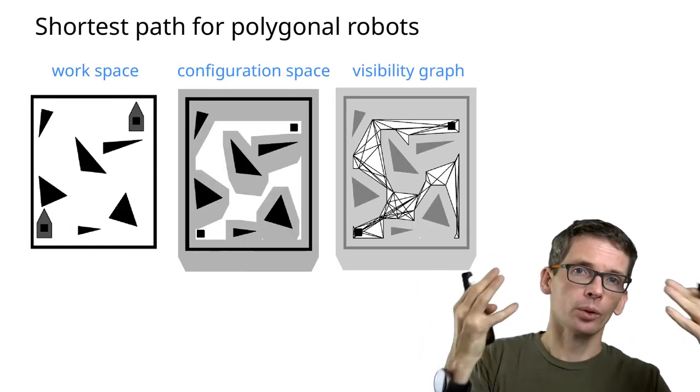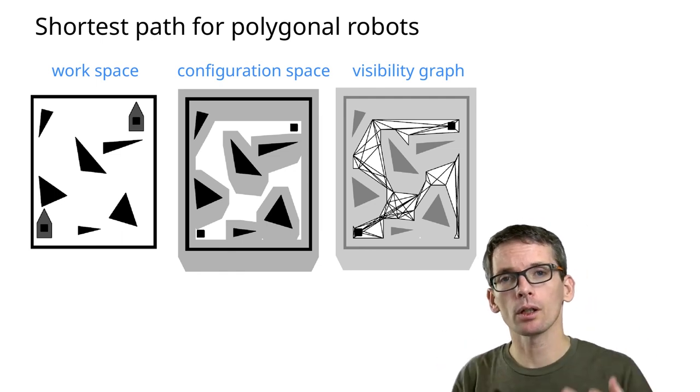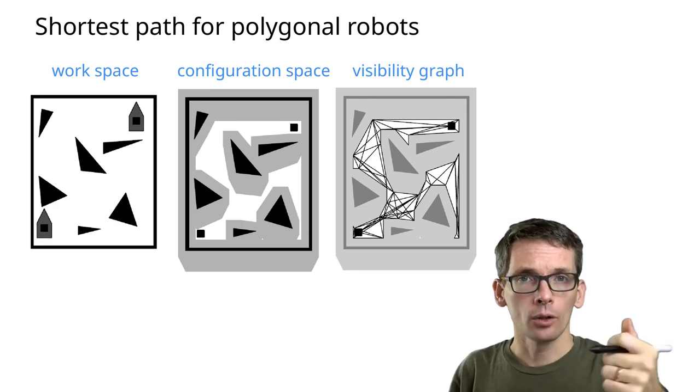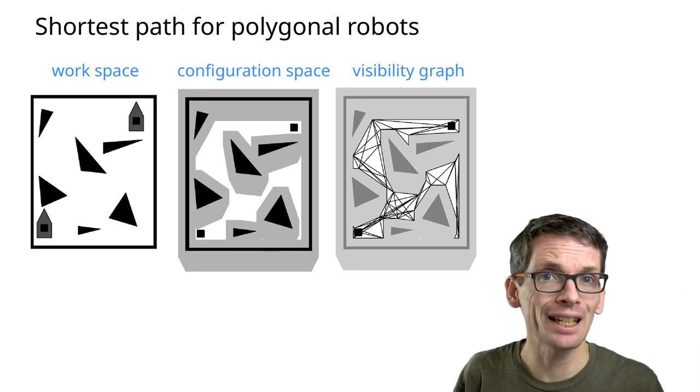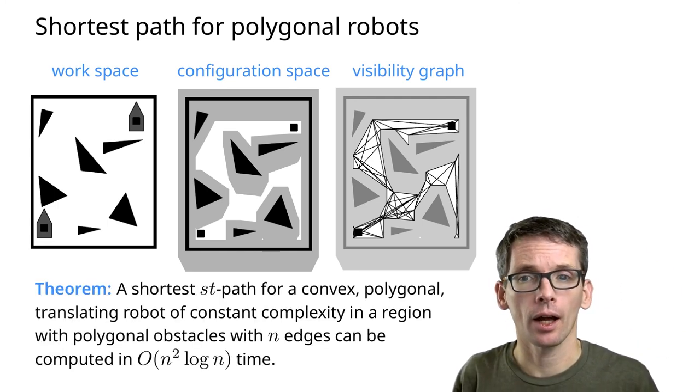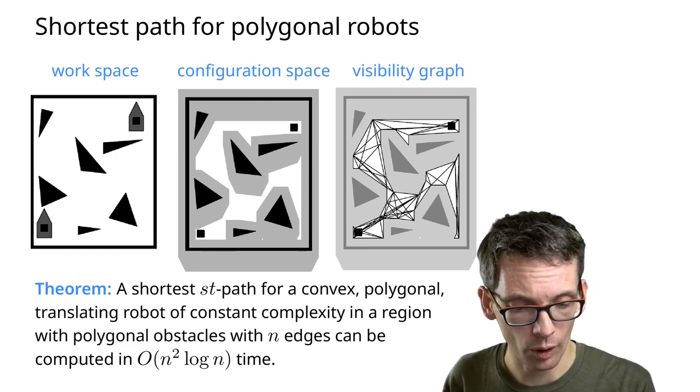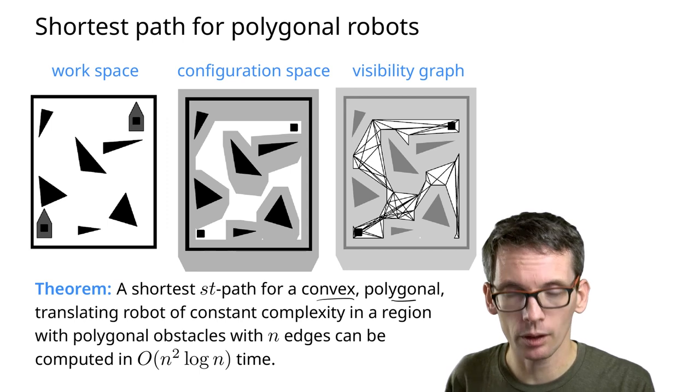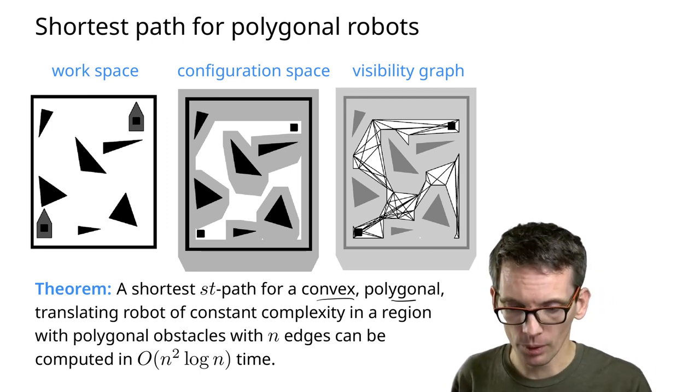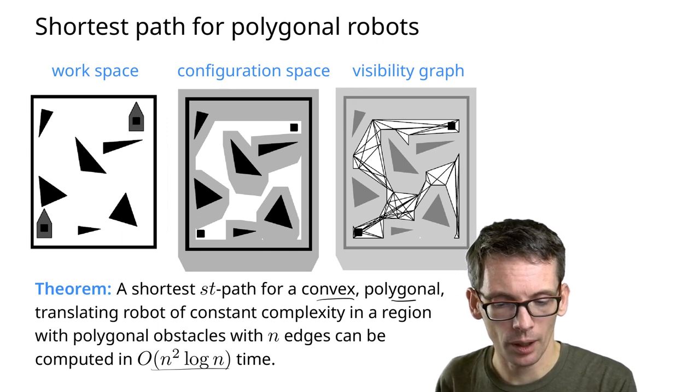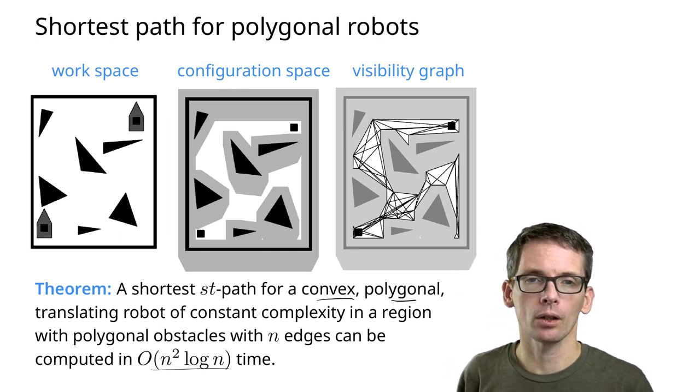We start with the workspace, we compute the forbidden spaces or the union for the forbidden spaces, use a visibility graph there, and in that way can compute for a convex polygonal translating robot of constant complexity the shortest path in n² log n time.